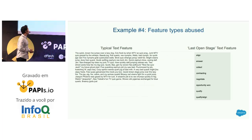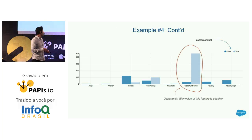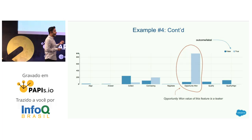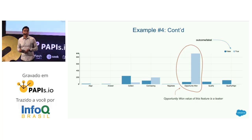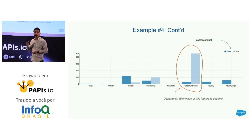The final example is abuse of feature types. On the left I have a typical text feature, and on the right a feature called last open stage, which is an actual text feature in Salesforce but actually looks like a categorical feature. To make matters worse, one of its values is causing hindsight bias — when last open stage has the value 'opportunity one', the light blue bars show almost all records have a positive outcome, meaning it's leaking label information into the training data. This model will again perform really badly in the production dataset. I hope by now I've convinced you what dirty and unknown data means in enterprise machine learning and the problems it creates.